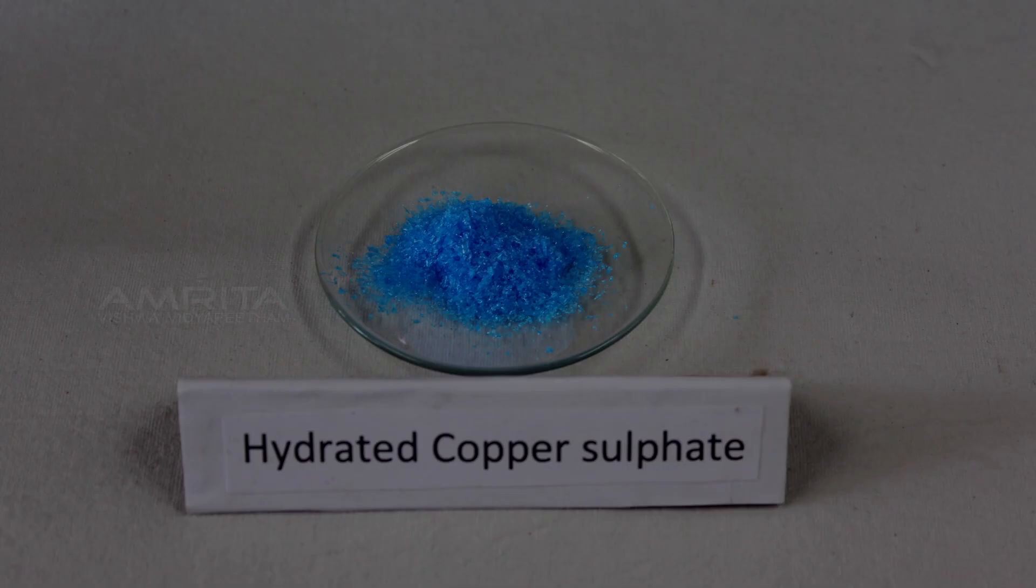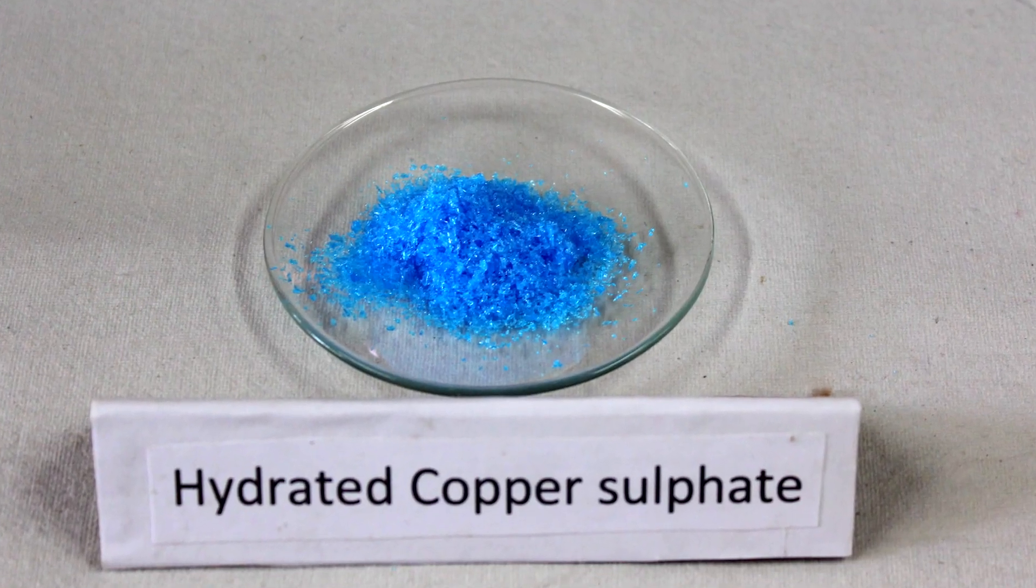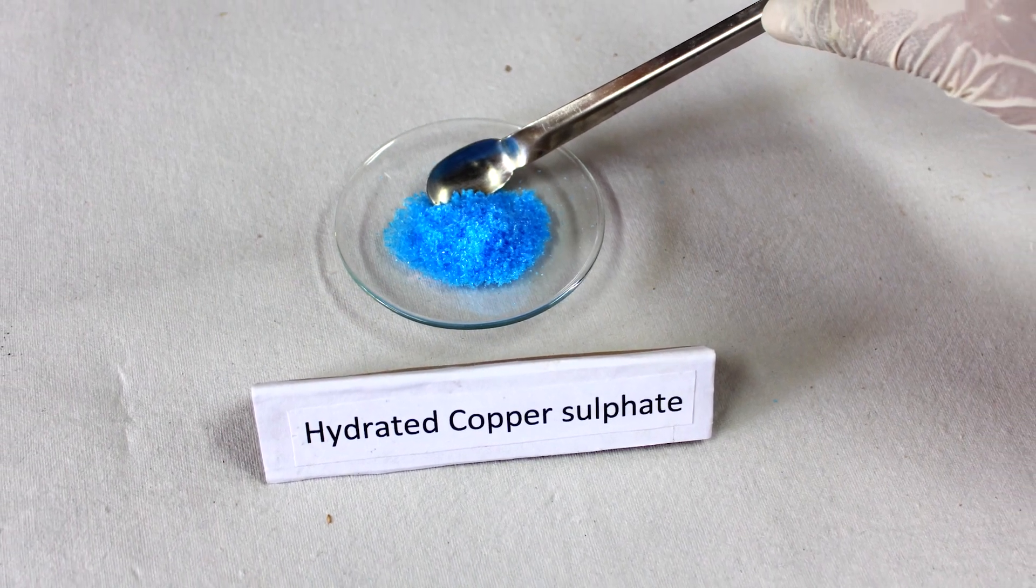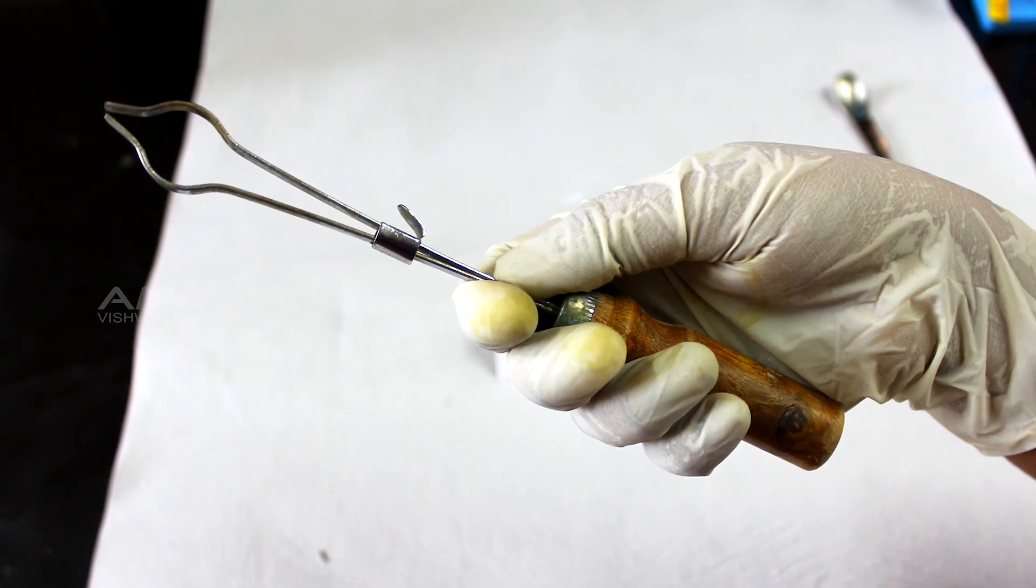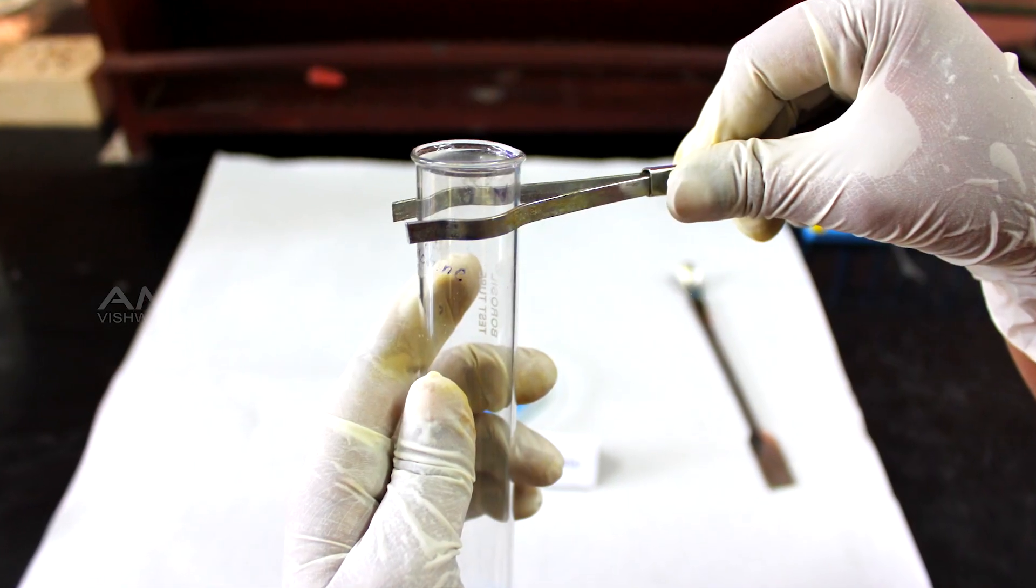Procedure: Take a small amount of hydrated copper sulphate crystals in a dry boiling tube using a spatula. Hold the boiling tube with a test tube holder.